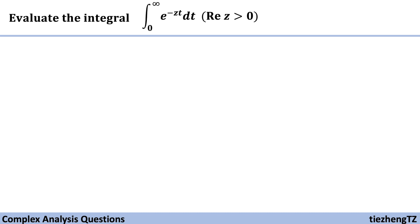First we need to find the antiderivative of this equation. In this case, the antiderivative of e to the power of minus zt is minus 1 over z times e to the power of minus zt, from zero to infinity.